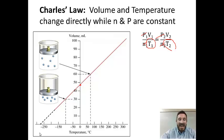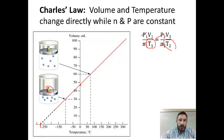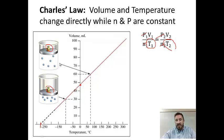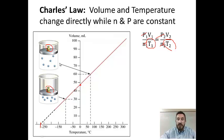If we change the temperature to Kelvin, the graph extends all the way to negative 273, which represents absolute zero. We see the graph works perfectly when all units are in Kelvin. The weights represent constant pressure. When you increase temperature, particles move faster and cause a greater volume — a direct relationship: increase in temperature, increase in volume.